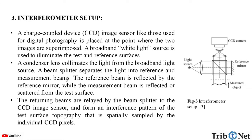The reference beam is reflected by the reference mirror, while the measurement beam is reflected or scattered from the test surface. The returning beams are relayed by the beam splitter to the CCD image sensor and form an interference pattern of the test surface topography that is spatially sampled by the individual CCD pixels. Here in the figure, we can see the components making up the interferometer setup.